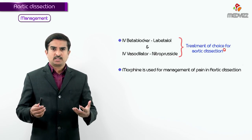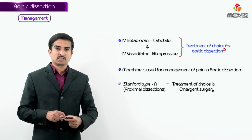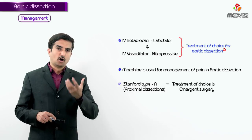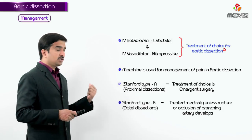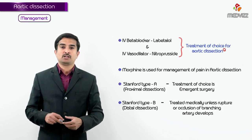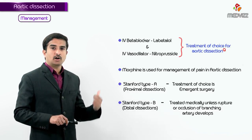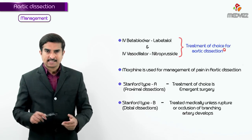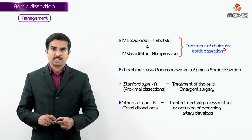According to the Stanford classification, Stanford Type A — proximal dissections — require emergent surgery because they are more catastrophic. Emergent surgery is indicated for Stanford A aortic dissection. Distal dissections (Stanford B) can be treated medically unless rupture or occlusion of a branching artery develops. This concludes the topic of aortic dissection.